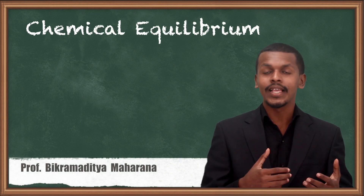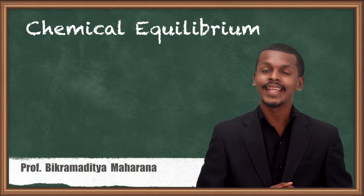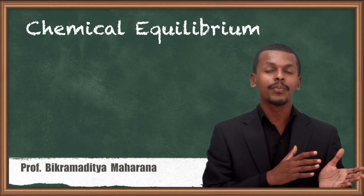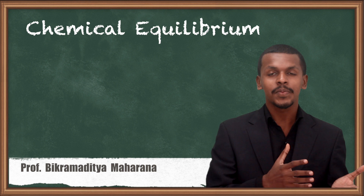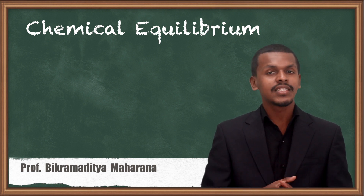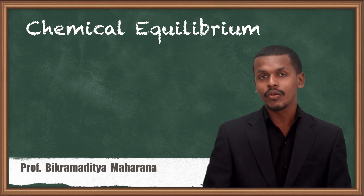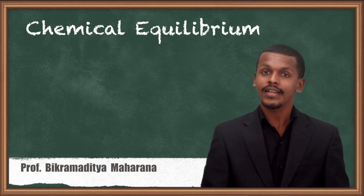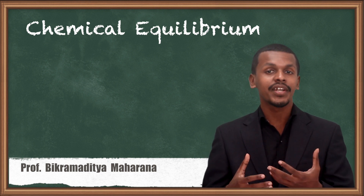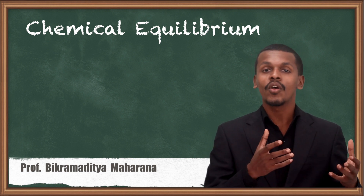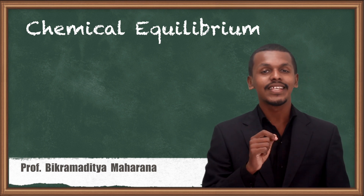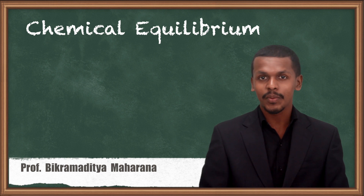in the previous lecture we got to know what is actually physical equilibrium, where both substances are present in an equilibrium phase. Now we are going to talk about chemical equilibrium. It is very similar, but in this case the reactant is converted into product and that product is converted back into reactant — that is, we are talking about a reversible process. Chemical equilibrium can be obtained in a reversible process.